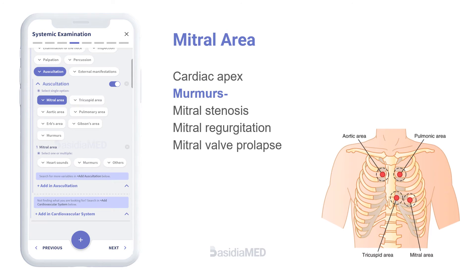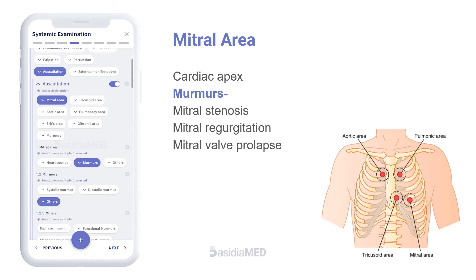The mitral area corresponds to the cardiac apex. Murmurs here represent mitral stenosis, mitral regurgitation, and mitral valve prolapse.